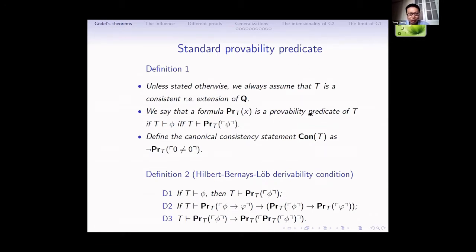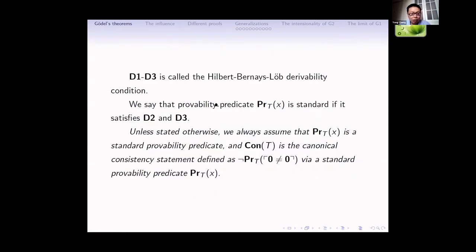Now I talk about the standard provability predicate, because I want to later talk about the generalization of Gödel's theorem. We say the formula Prov_T(x) is a provability predicate just means phi is provable in T if and only if this formula holds. Then we can define the canonical consistency statement: Con(T) is that zero ≠ zero is not provable in T. The famous Hilbert-Bernays-Löb derivability conditions are D1 and D3. We say the provability predicate Prov_T(x) is standard if it satisfies conditions D2 and D3.